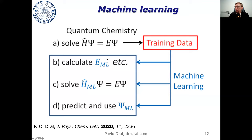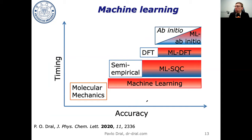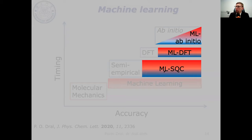The easiest approach is to solve the Schrödinger equation, generate lots of training data, and then use machine learning to learn from this data. Another way is to improve or change the Hamiltonian, which is possible for semi-empirical methods. A third fascinating approach is to predict the wave function itself, from which you can again solve the Schrödinger equation and obtain your properties.